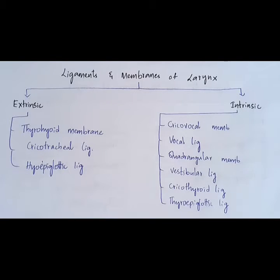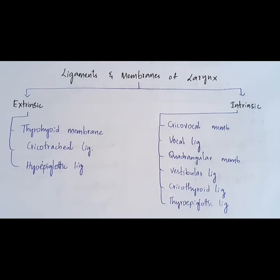The upper free end of the cricovocal membrane is thickened to form the vocal ligament. The next intrinsic structure is the quadrangular membrane, whose lower free edge is thickened to form the vestibular ligament. The vocal ligament and vestibular ligament are covered by mucous membrane to form the vocal fold and vestibular fold respectively. The cricothyroid ligament and thyroepiglottic ligament are also included under the intrinsic ligaments and membranes of the larynx. That's all for this video — I'll see you in the next video, bye.